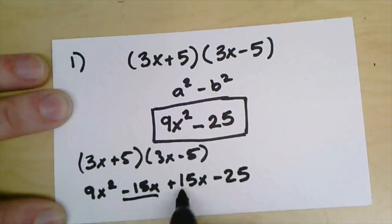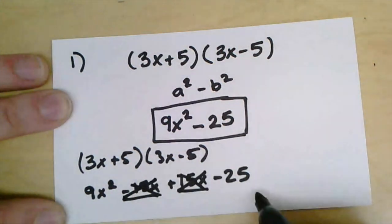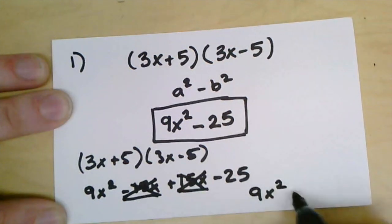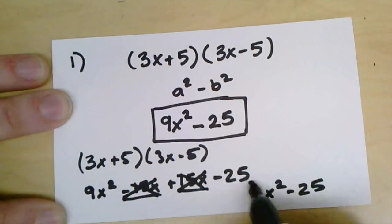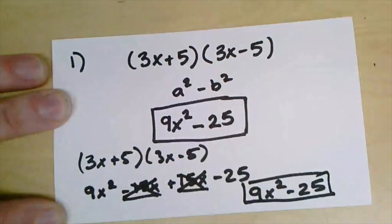You'll see when we go to combine like terms and we add the negative 15x and the positive 15x together, they cancel each other out. And all we're left with is that 9x squared and the minus 25, which is exactly what we got above, so we know that we used that pattern correctly.